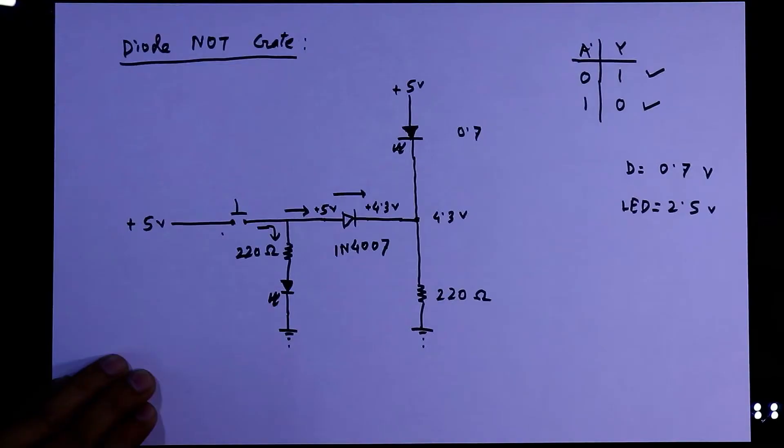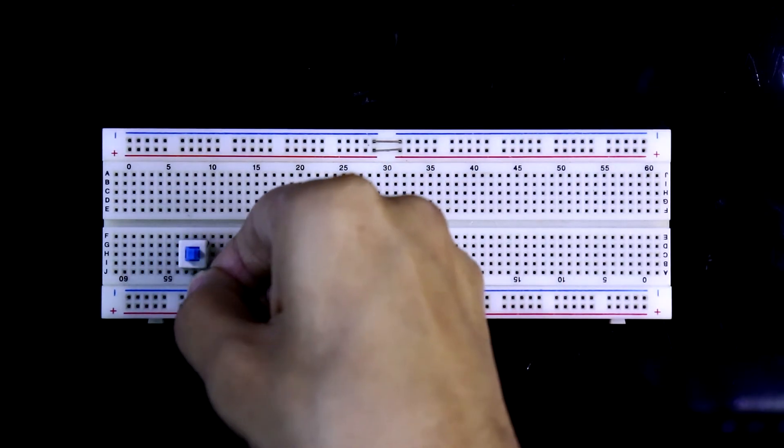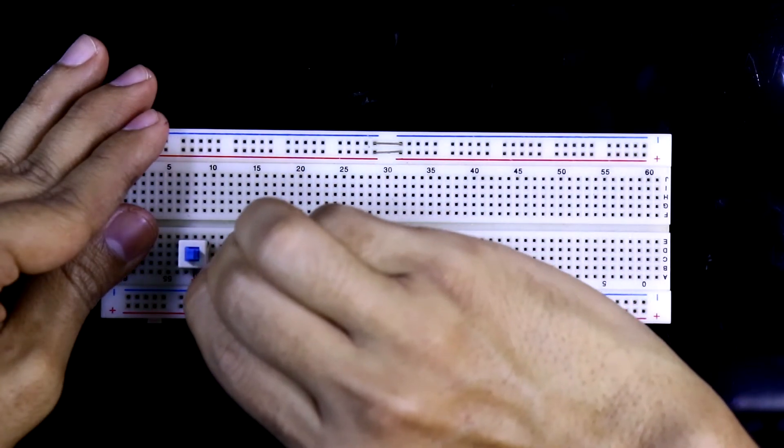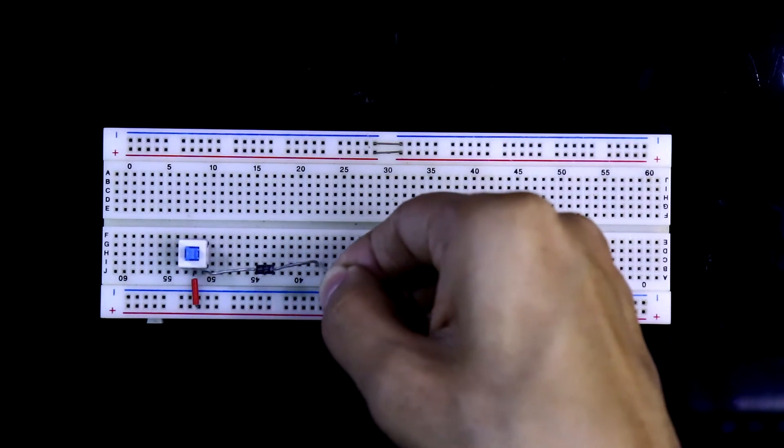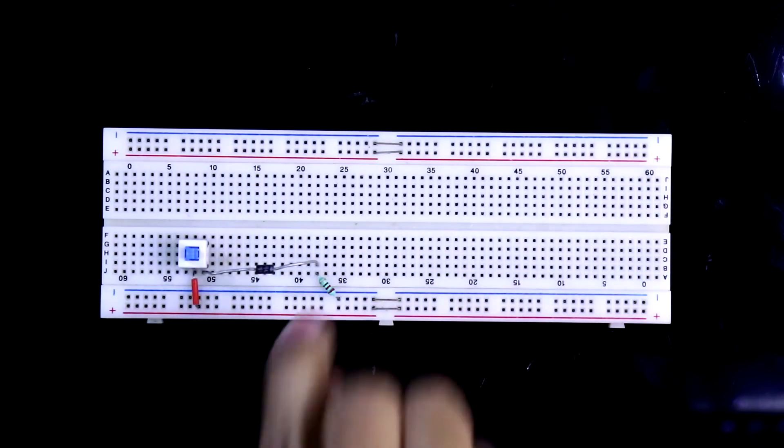Now see this circuit on the breadboard. Here is our switch. One pin of the switch is connected to the plus 5 volt. With the other pin of the switch, the diode is connected. This is the negative side, that is cathode side and this is anode side. With this, a 220 ohms resistor is connected, and then this resistor is connected to the ground.